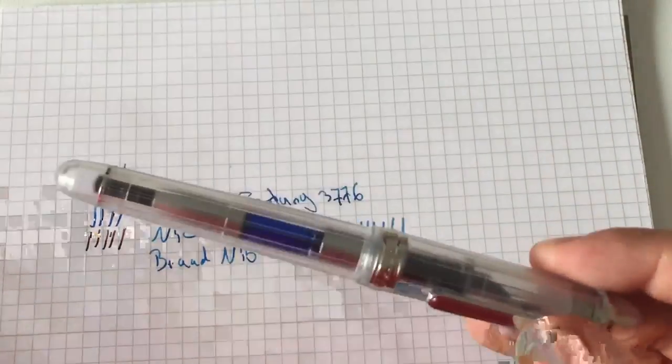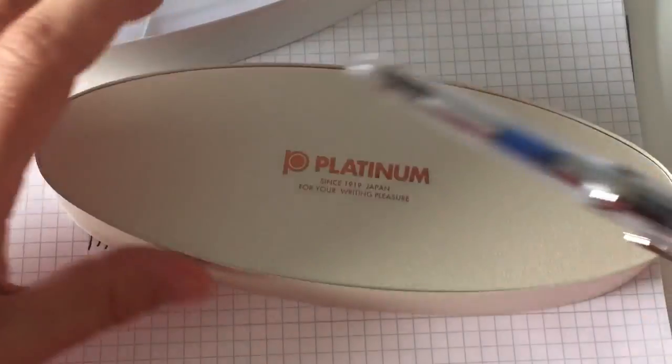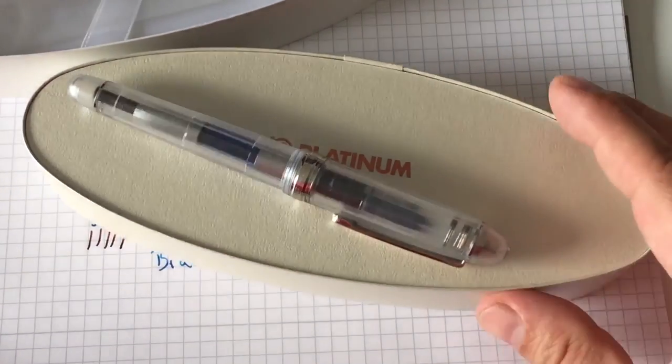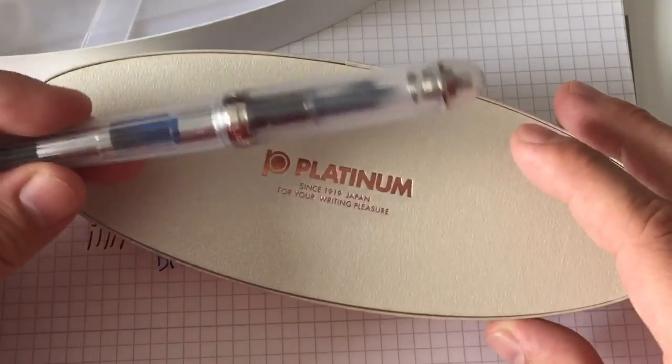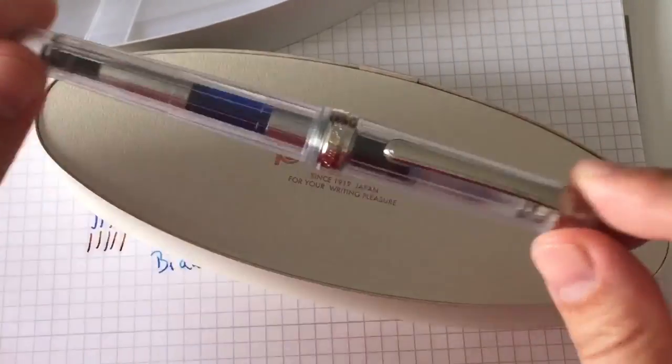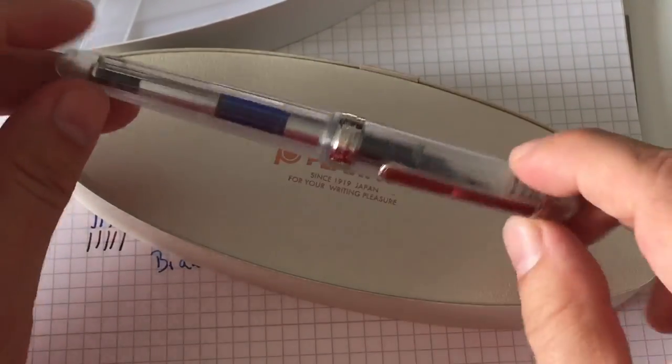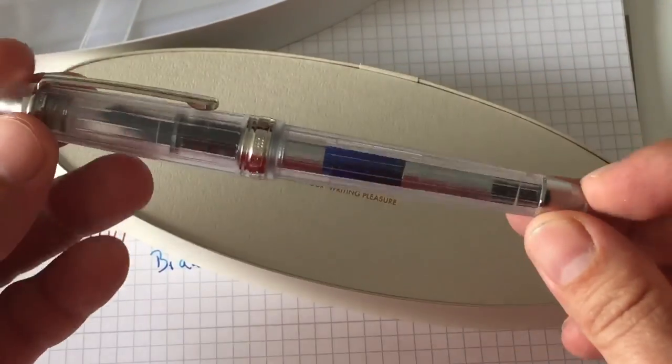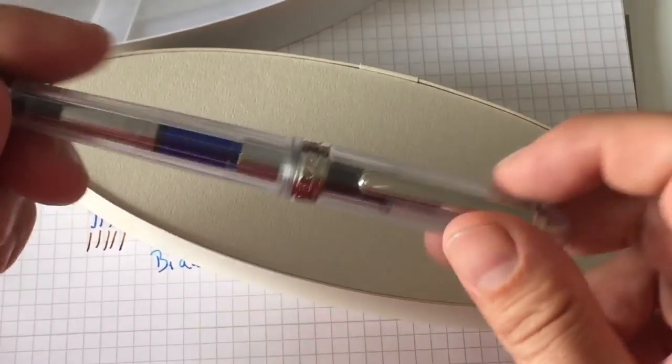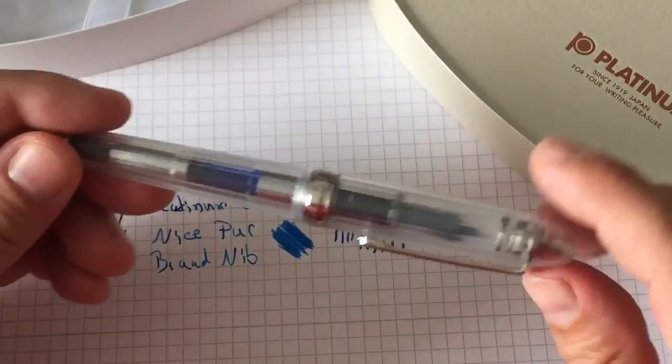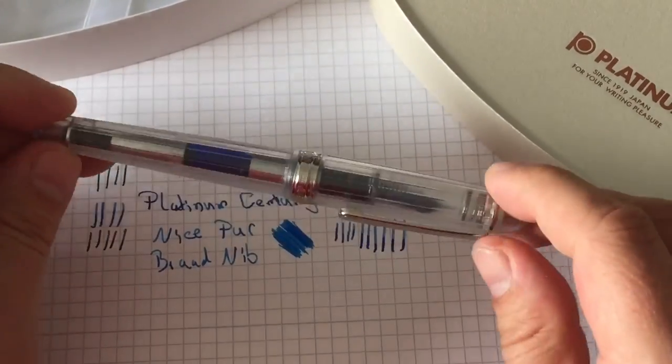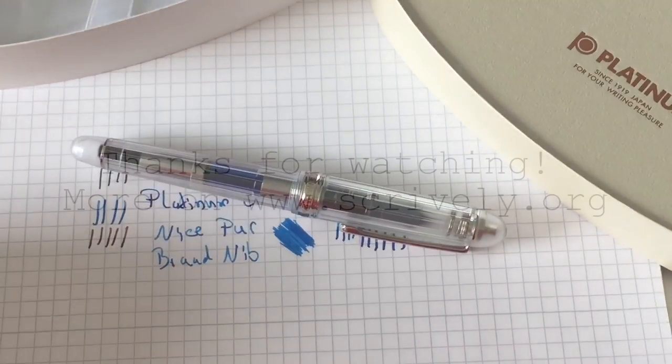All right, that's that with that Platinum Century fountain pen here. As I said, it is a really nice fountain pen. It's been in my daily rotation for the past three months now, and I wrote with it basically every day. I really love that fountain pen. I think that's all there is to say about that pen. I hope you enjoyed the review, I hope it was helpful to you, and I'll see you at the next review. Bye bye.